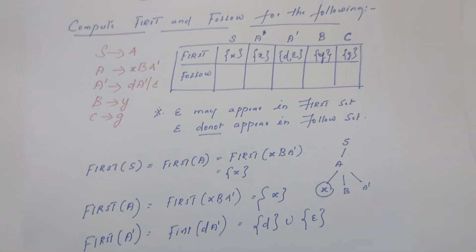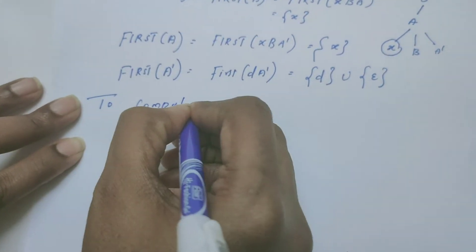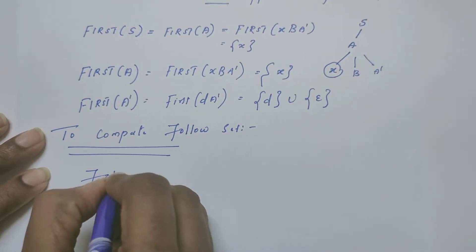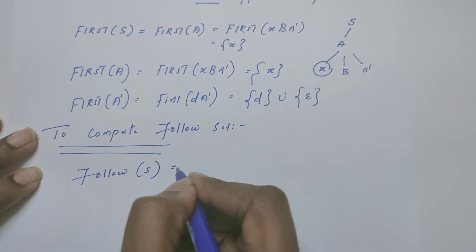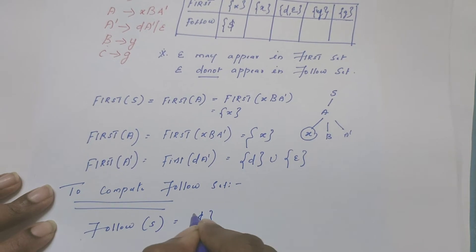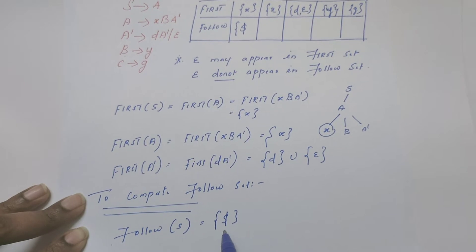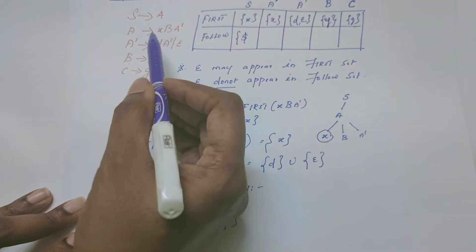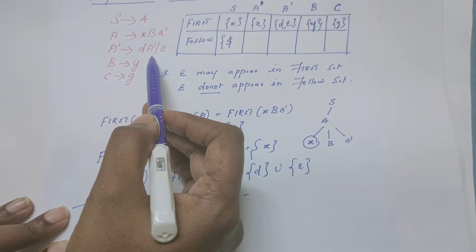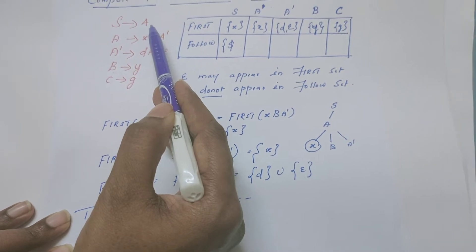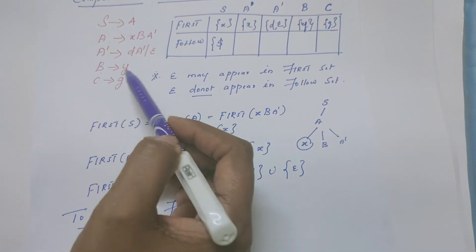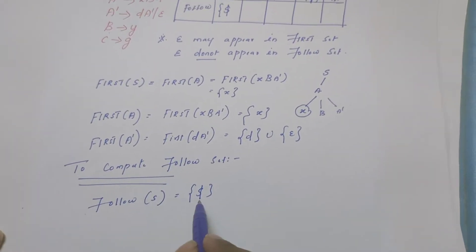Now we are going to compute the follow set for all the non-terminals. First we find follow of S. Since S is the start symbol of the grammar, by default, the follow set of S contains dollar. Apart from dollar, there may be some other symbols which follow S in the parse tree. We need to select the production rules where S appears on the right-hand side. None of the rules contain S on the right-hand side. So follow of S is just the dollar symbol.